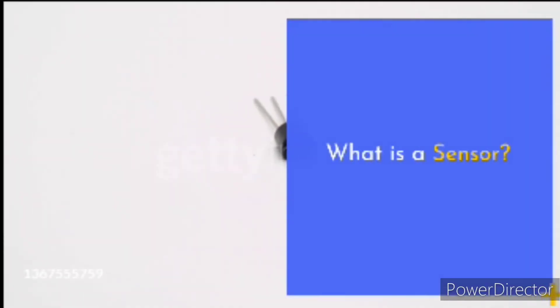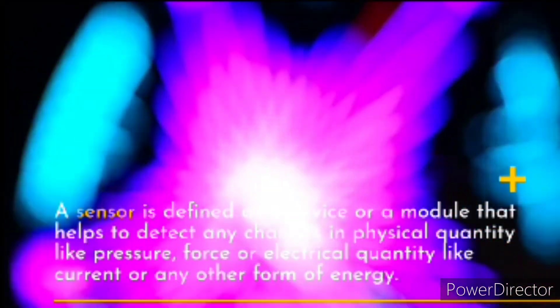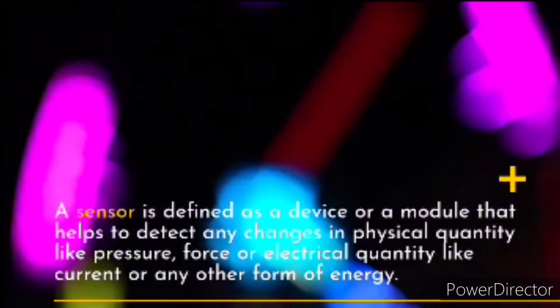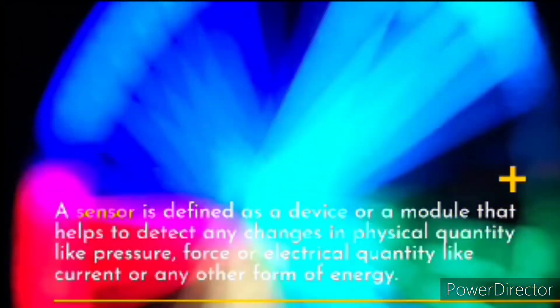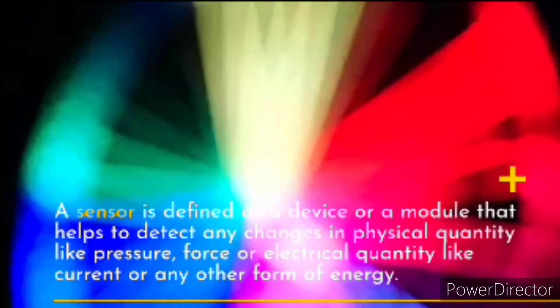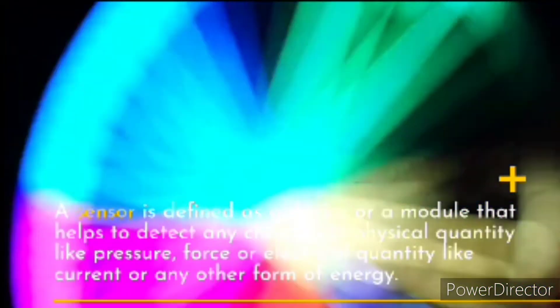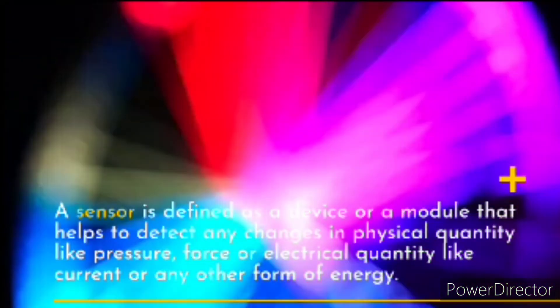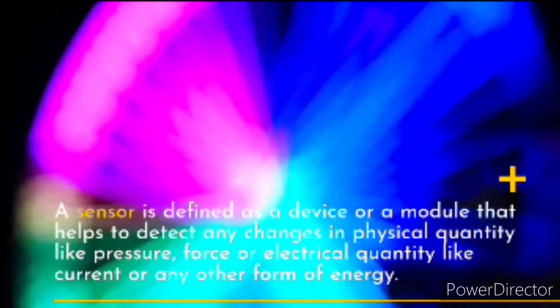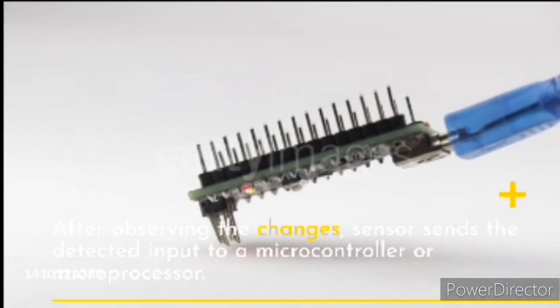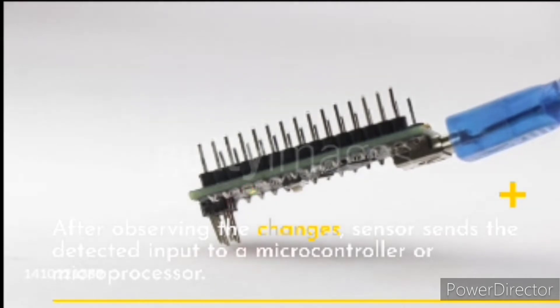What is a sensor? A sensor is defined as a device or a module that helps to detect any changes in physical quantity like pressure, force, or electrical quantity like current, or any other form of energy. After observing the changes, the sensor sends the detected input to a microcontroller or microprocessor.